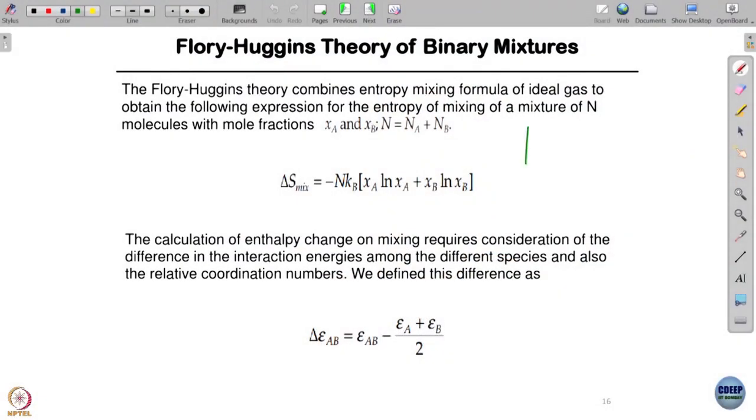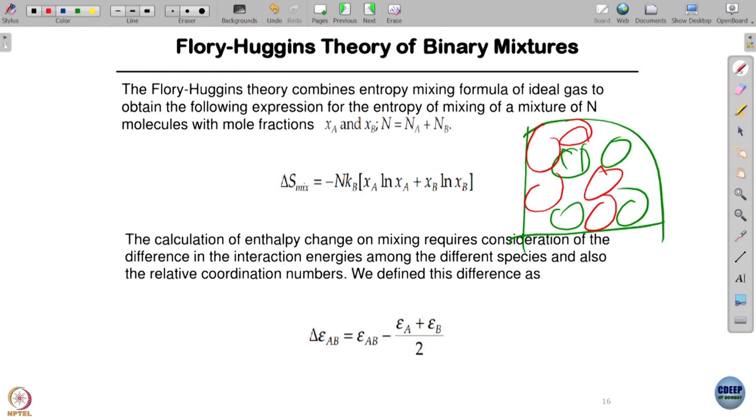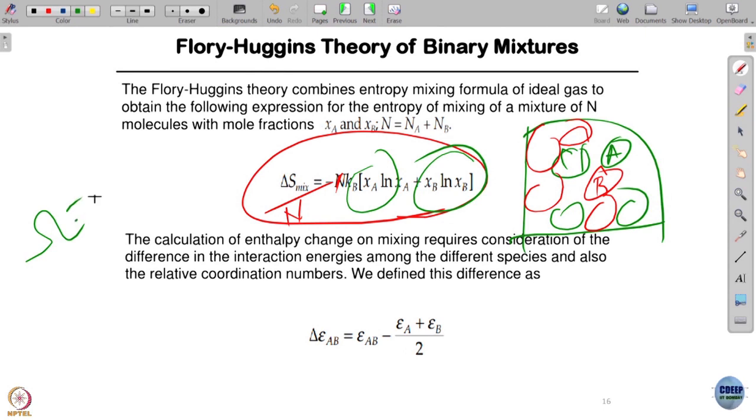When you put A and B together in a mixture, first thing I get is entropy of mixing. Entropy of mixing per particle is Kb times (Xa ln Xa + Xb ln Xb), where Kb is Boltzmann constant, Xa is mole fraction of A, Xb is mole fraction of B. This comes from simple combinatorics from N factorial divided by NA factorial times NB factorial. It's very useful to get that.